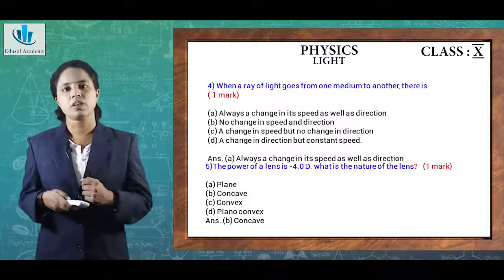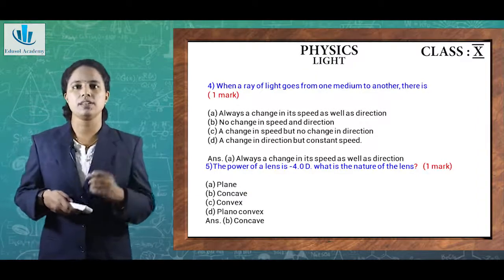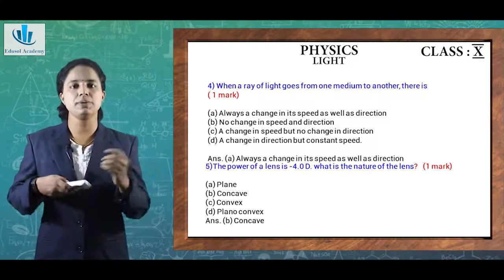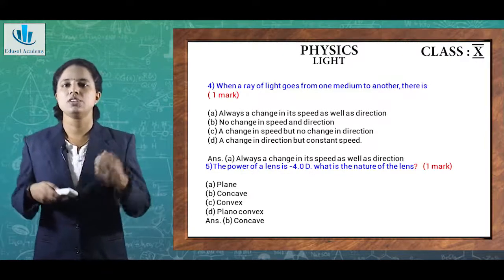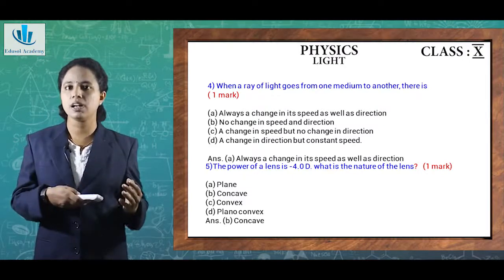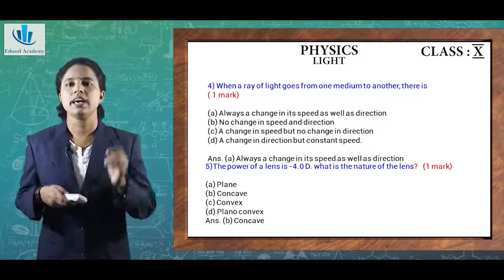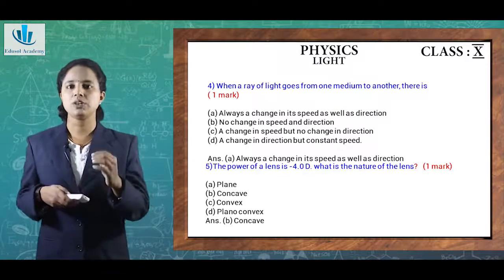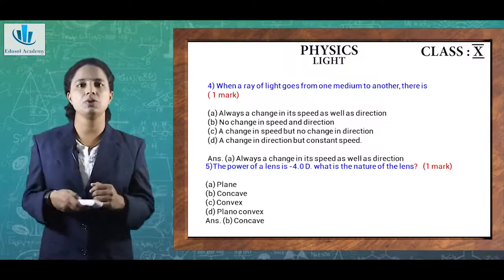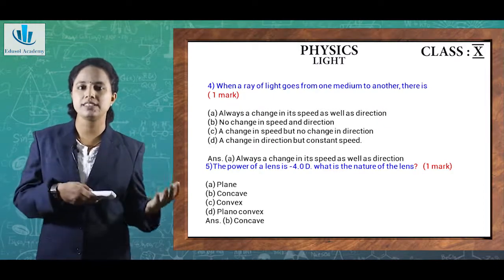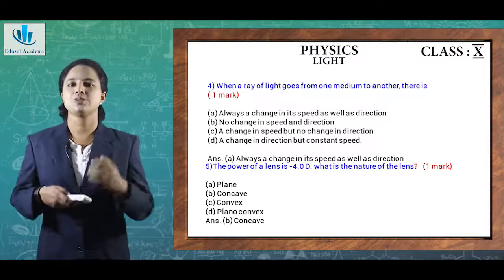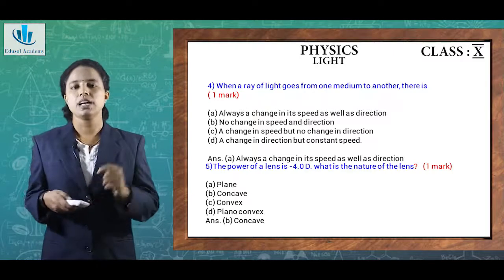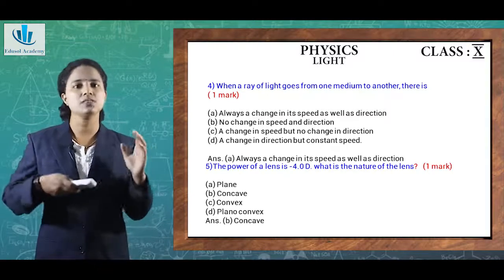Next question: when a ray of light goes from one medium to another — the options are: always a change in speed and direction; no change in speed and direction; a change in speed but no change in direction; or a change in direction but constant speed. We know that when a ray of light goes from one medium to another there will be a change in speed as well as direction, so the correct option is answer A.